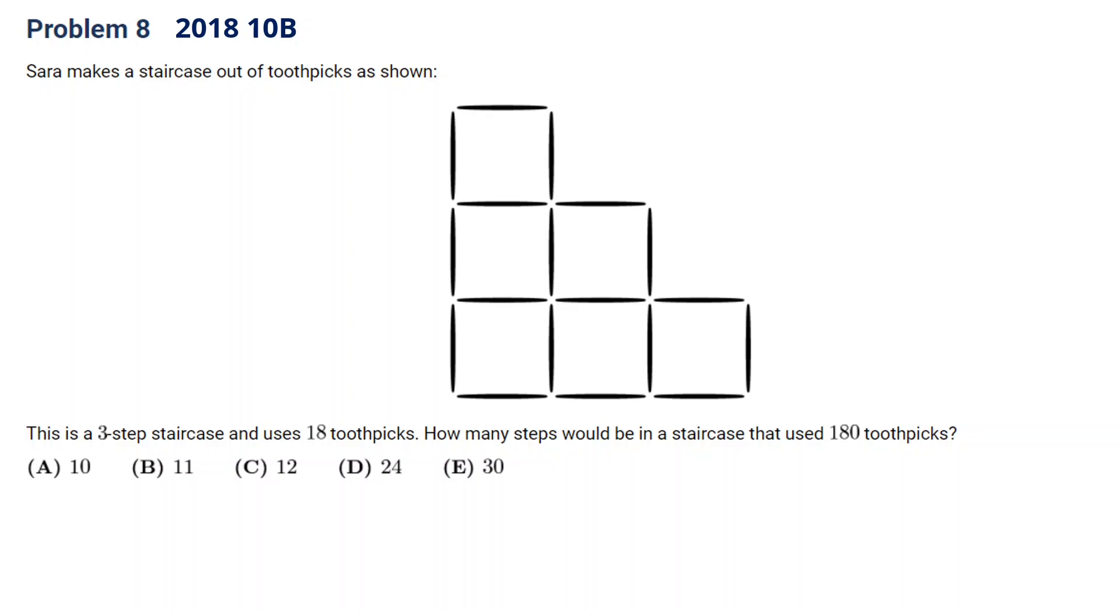Okay. Let's first find the pattern of this question. So let's make a table. So step, if it's one step, we're going to have, so let's say this is step and this is number of toothpicks. So one step, we need 4.